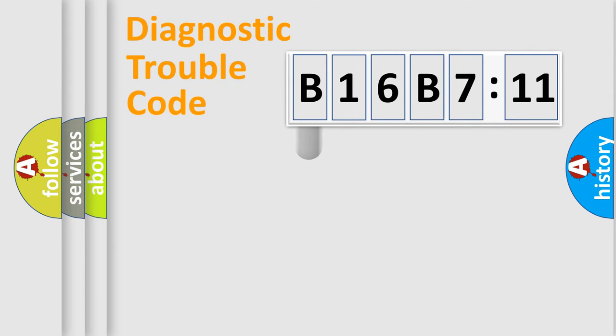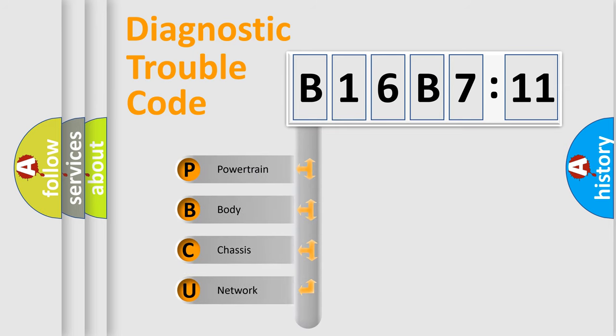First, let's look at the history of diagnostic fault code composition according to the OBD2 protocol, which is unified for all automakers since 2000. We divide the electric system of automobile into four basic units.